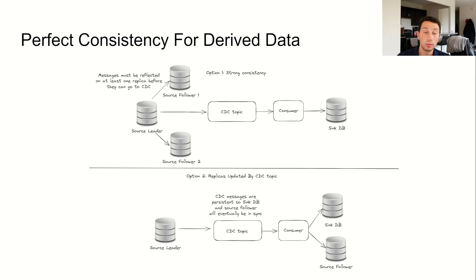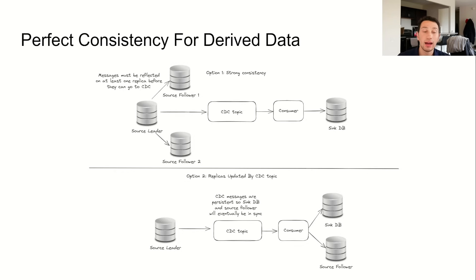Another option would be to actually create our database replicas from the change data capture Kafka topic. That way, we'd ensure that Kafka is the source of truth for a replication log, and any replica that becomes the primary after a leader failure would have seen the same messages as any derived views. I'm not aware of any databases that use CDC as their replication mechanism, so we'd have to rebuild the failover logic ourselves, which would make life a lot more complex. Let's think if we have any other options that avoid a bunch of custom code and don't require consensus algorithms in the critical path.